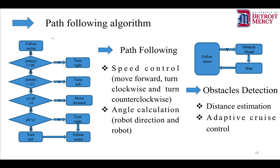For obstacle detection, we estimate the distance of an obstacle ahead and perform speed control accordingly. The second component is adaptive cruise control, which is also part of the obstacle detection system.